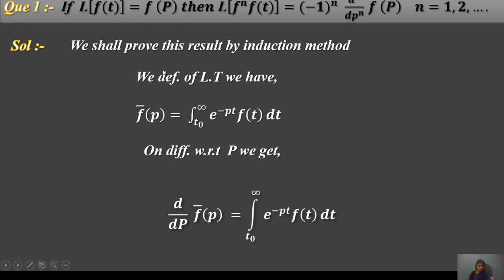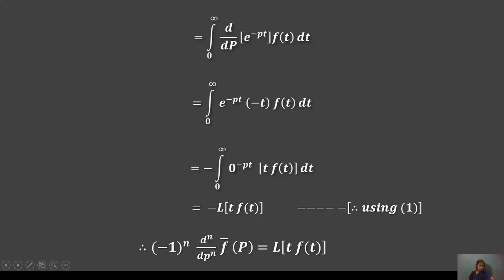We shall prove this by induction. By the definition of the Laplace transform, differentiating F(p) with respect to p: d/dp F(p) = integral from 0 to infinity of e^(−pt) f(t) dt. Differentiating under the integral sign gives minus t·f(t), so d/dp F(p) = −L{t f(t)}, meaning L{t f(t)} = −d/dp F(p). Applying this repeatedly gives L{t^n f(t)} = (−1)^n · d^n/dp^n · F(p).